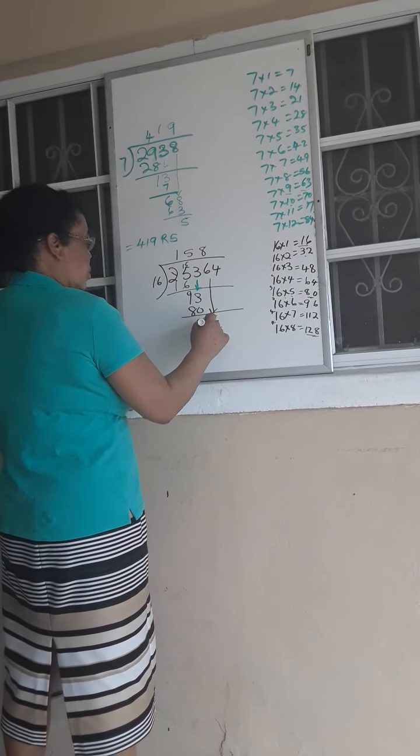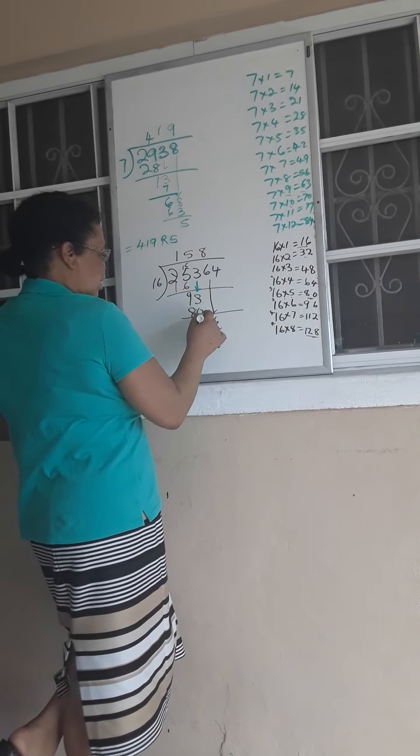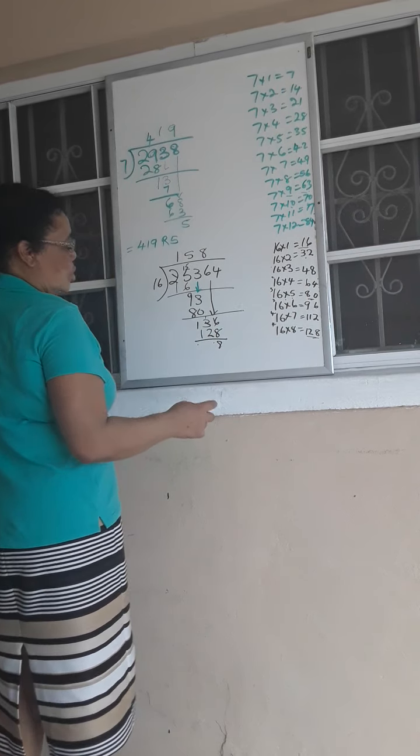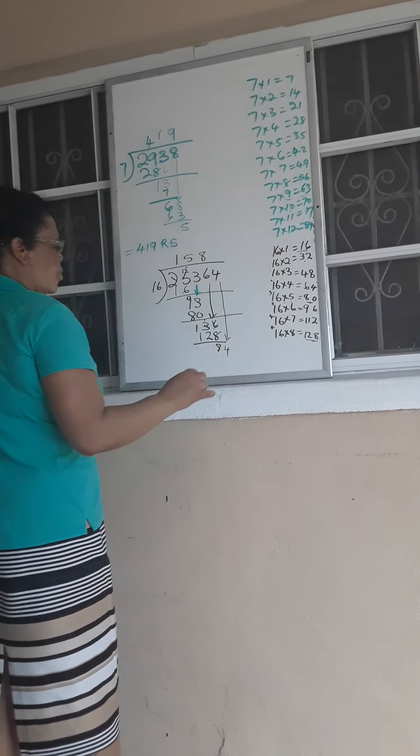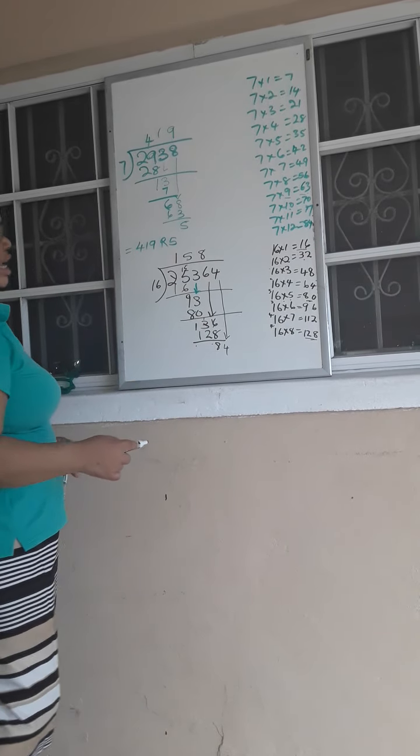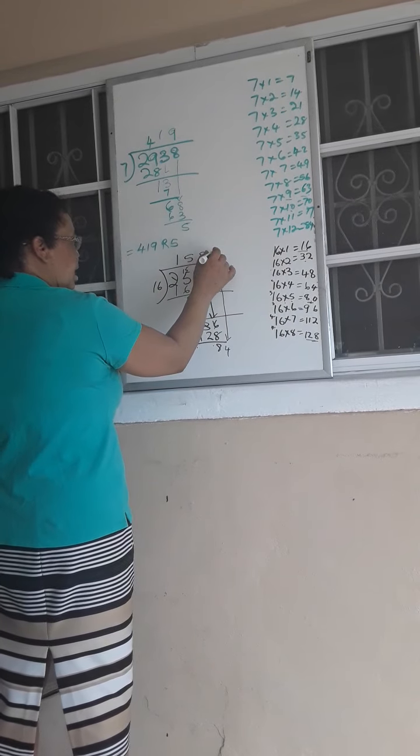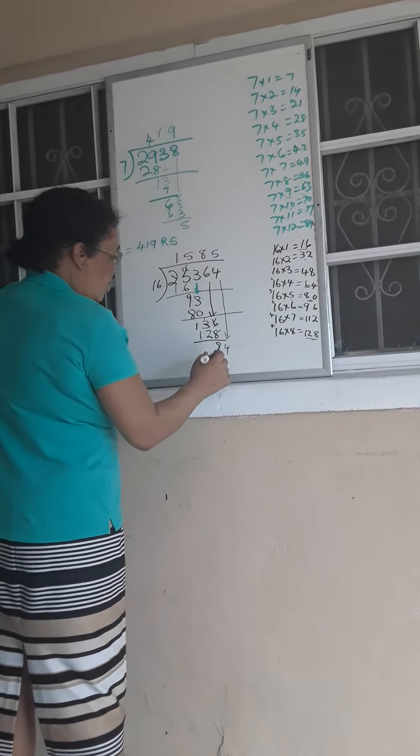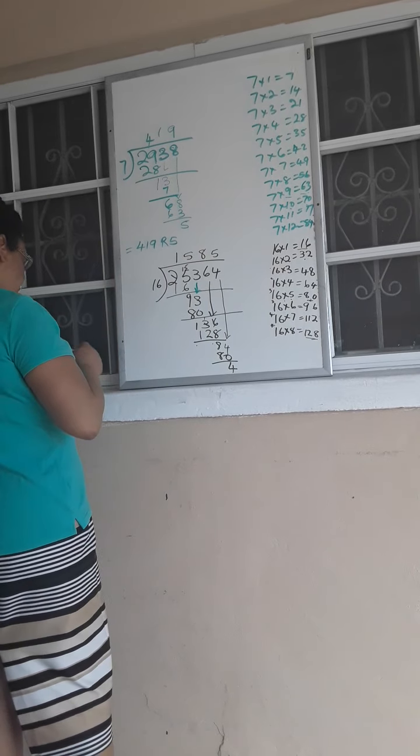I'm going to go back. From 136, I'm going to subtract 128 and be left with 8. I'm going to bring down my 4. 16 into 84, and that's going to give me 5 times, and 5 times 16 is 80. And my remainder is going to be 4.